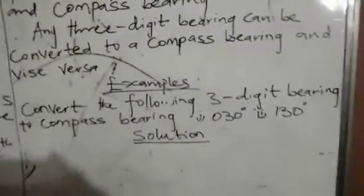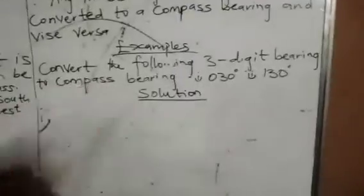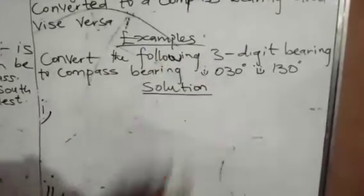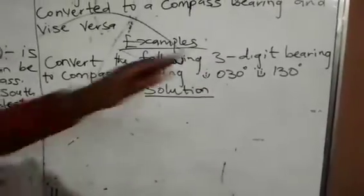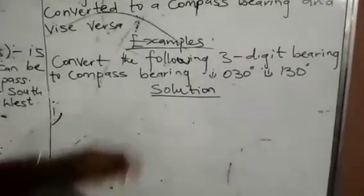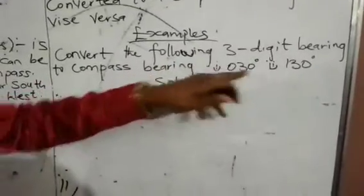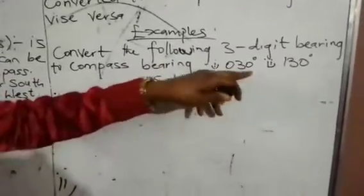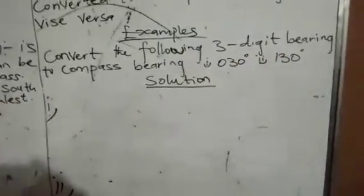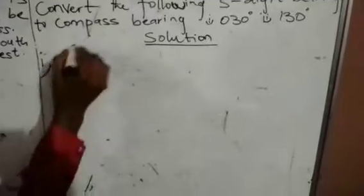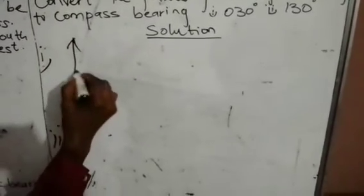We have an example on the board: convert the following three-digit bearings to compass bearing. We have 030 degrees, which is 30 degrees, and 130 degrees. First of all, draw the compass bearing.